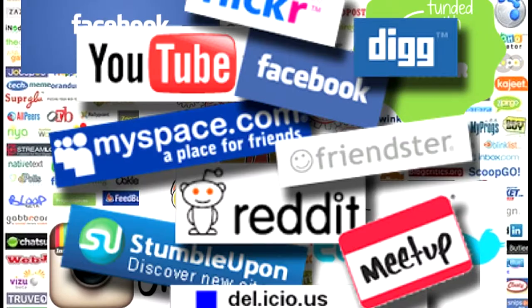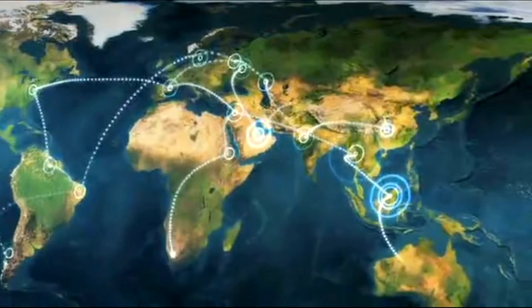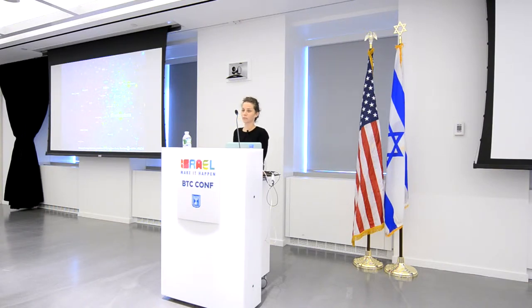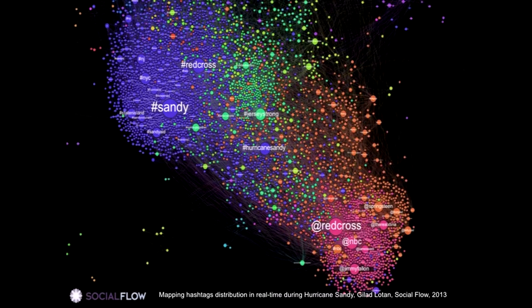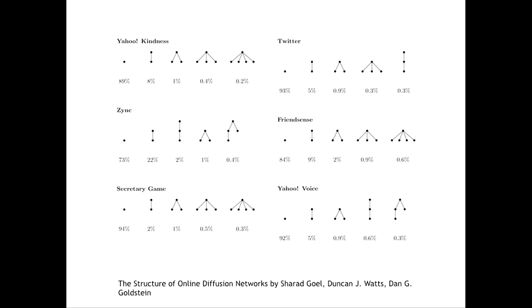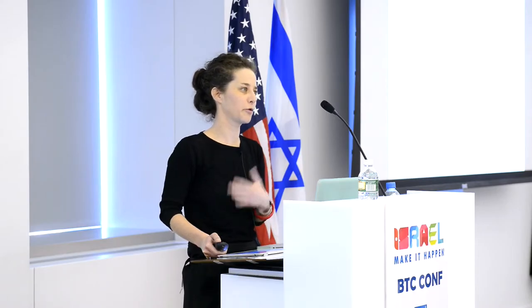Never before have we communicated on such a mass scale as we do today with the internet. How do we actually communicate with each other? Today we can tag and track data in real time through Facebook and Twitter, and we want to make sense of all these communications and visualize them. Some studies show that most of the data stops at 93% of the domain itself.